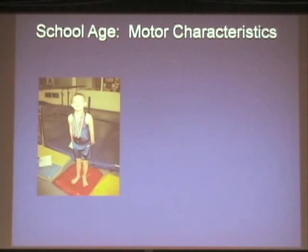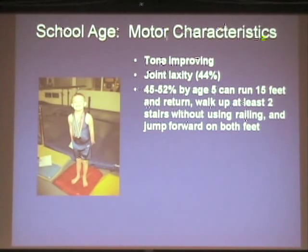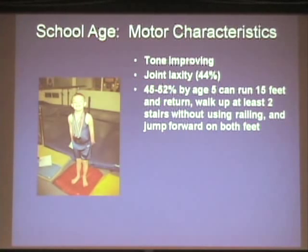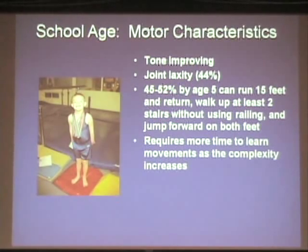Moving to school-age children — muscle tone is improving and strength is getting better, though joint laxity is still a concern. One study looked at motor attainment at age five: running 15 feet and returning, walking up stairs using a railing, and jumping forward with both feet — about half of five-year-olds with Down syndrome could accomplish all three. The work you're doing with these children really does make a difference. The extra exercise and practice gets them to these milestones faster, and repetition is key.